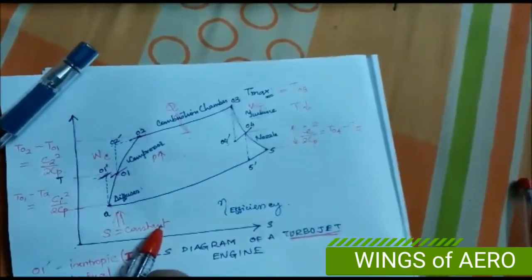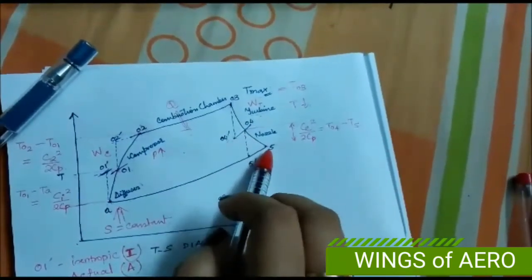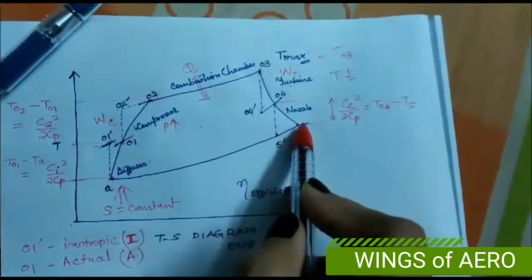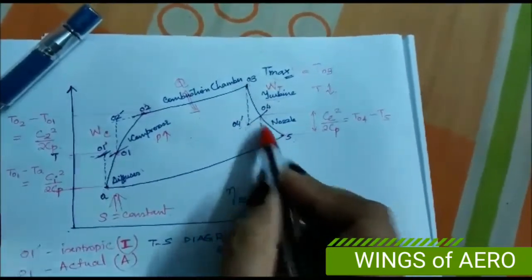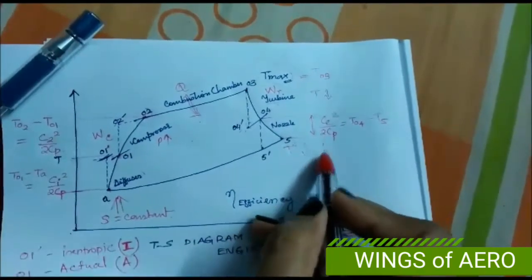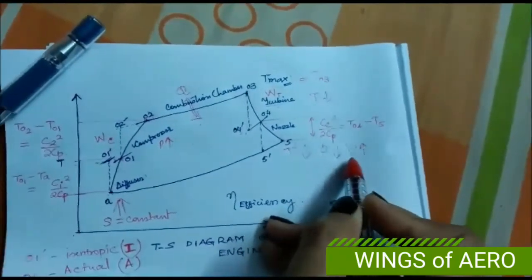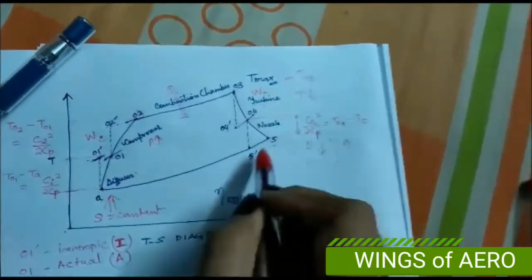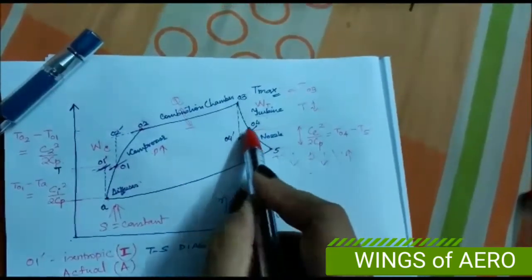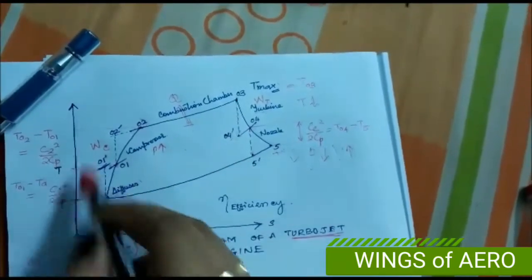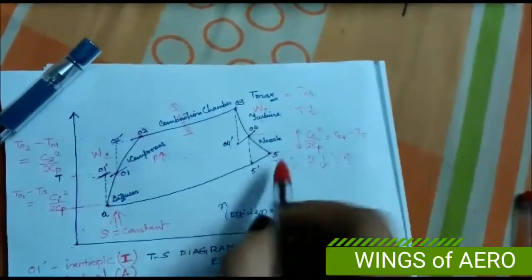The nozzle's function is to increase the velocity of the exhaust gas. As velocity increases, both temperature and pressure decrease, since pressure and velocity are inversely proportional. In the ideal or isentropic case, the dotted line is always parallel to the temperature line on the T-S diagram.